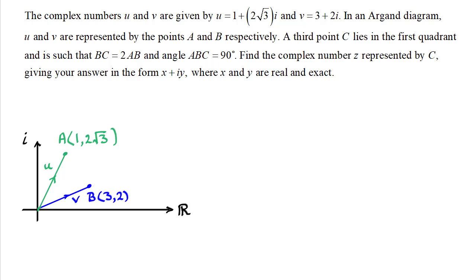What we've got here is the origin o. Now you'll notice I've written our complex numbers for u and v in coordinate form here. This one for instance, three in the real direction, two units in the imaginary direction representing the complex number three plus 2i.